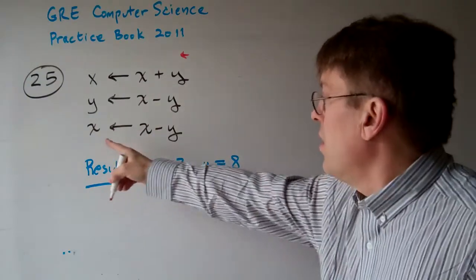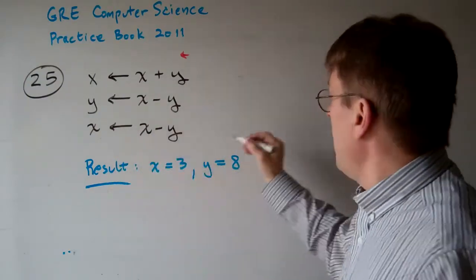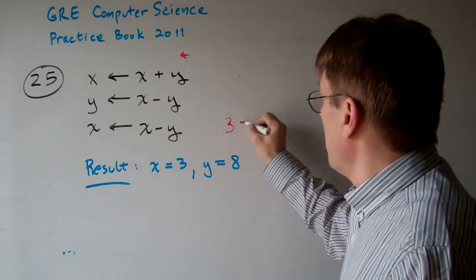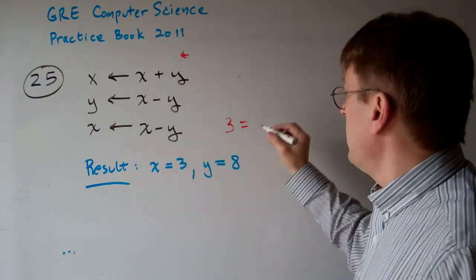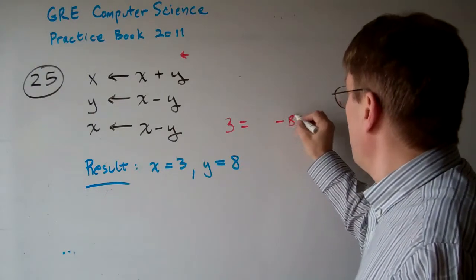Well, let's work our way backwards. We know x at the end is 3 and we know y at the end is 8. So those are given to us.